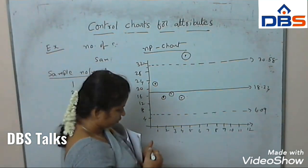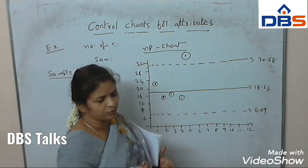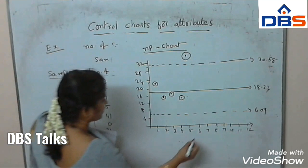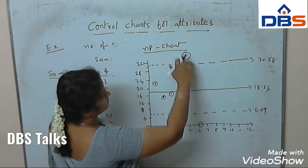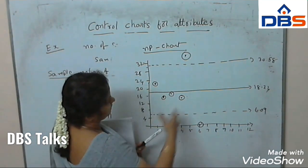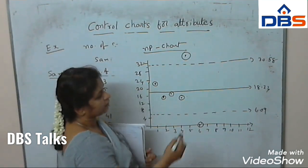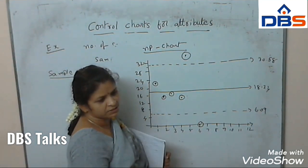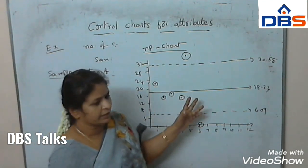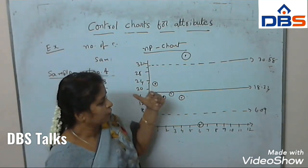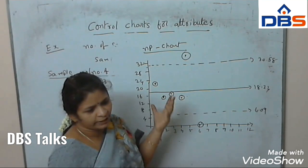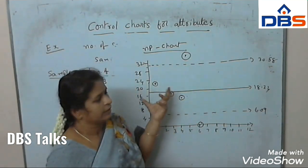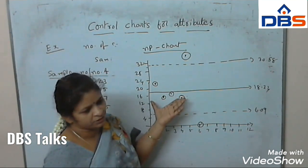Since 41 lies outside the upper control limit, we can say that the production is not under control. Some points also lie at 6.0, which is outside the lower limit. All sample points do not lie within the control limits, so the production is going the wrong way with too many defectives. We have to stop the production, identify where the mistake is, and improve the quality of the product. This is the method of drawing the NP chart.